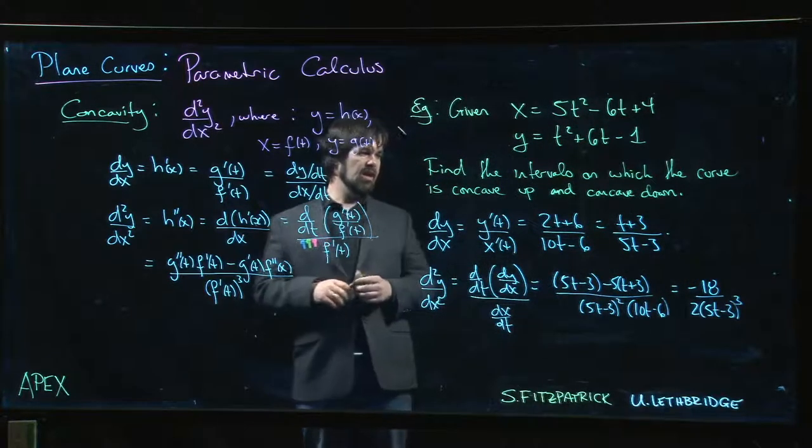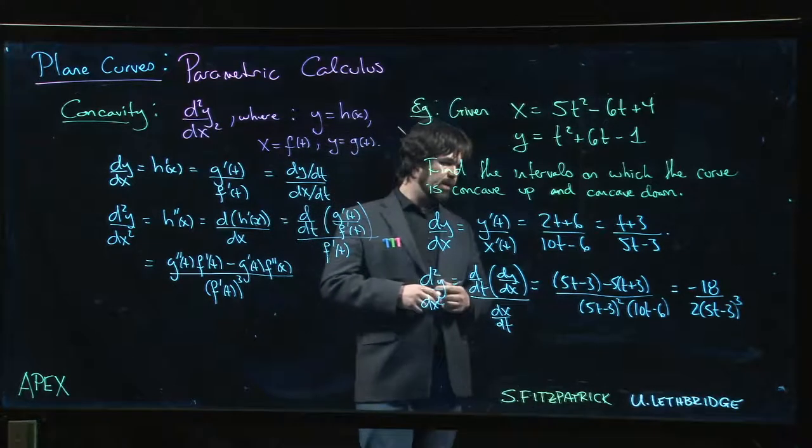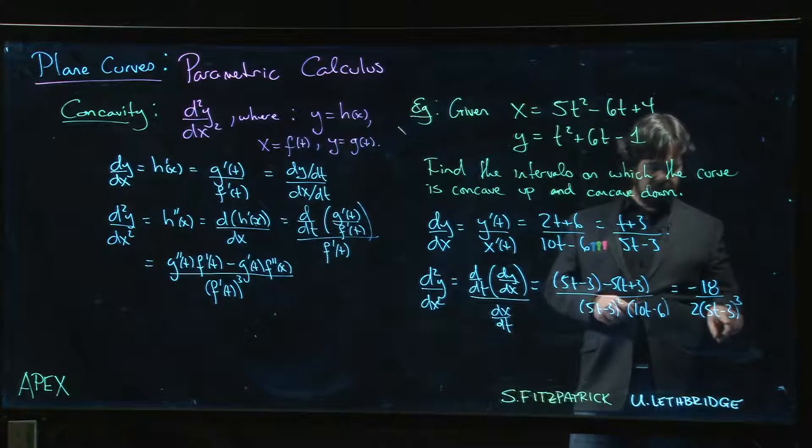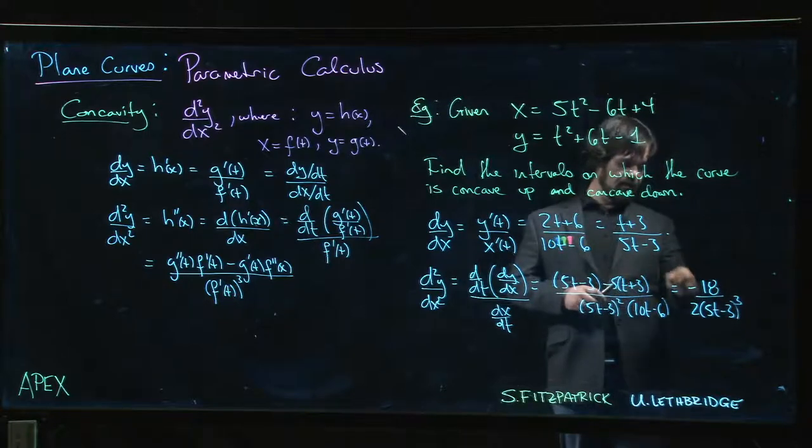So we can actually make sense of that. Now we can actually say that if t is less than 3 over 5, then this will be negative and that will be negative, so it should be concave up.